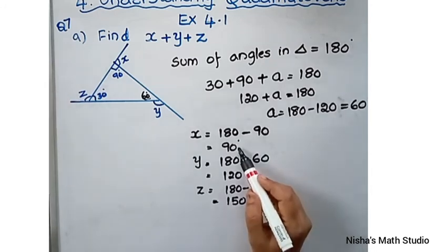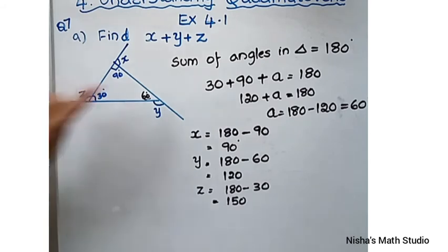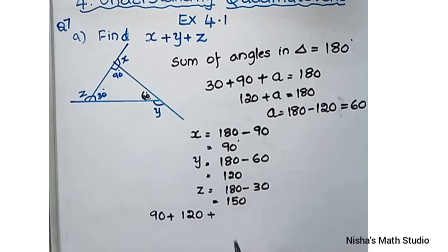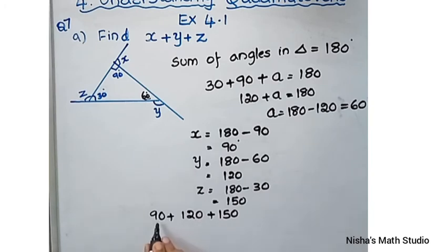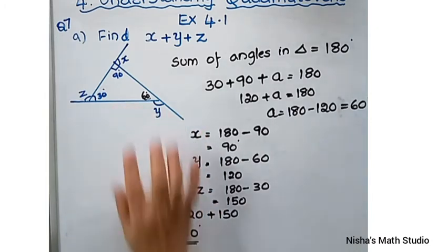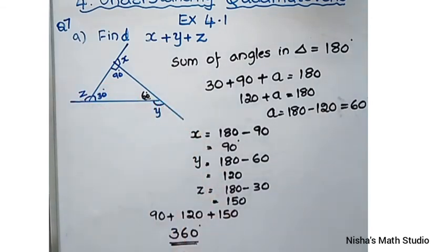So X, Y, and Z are 90, 120, and 150. The question is to find X plus Y plus Z: 90 plus 120 plus 150. That gives 270 plus 90, which equals 360 degrees. As we know from our previous video, the sum of exterior angles for any polygon — whether triangle, quadrilateral, or pentagon — is always 360 degrees.